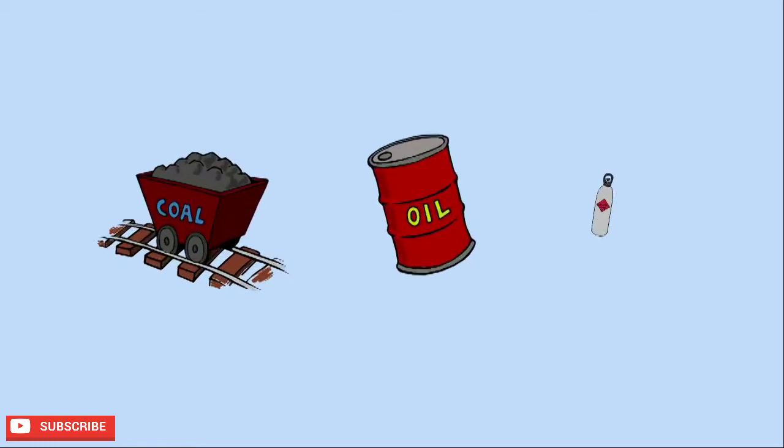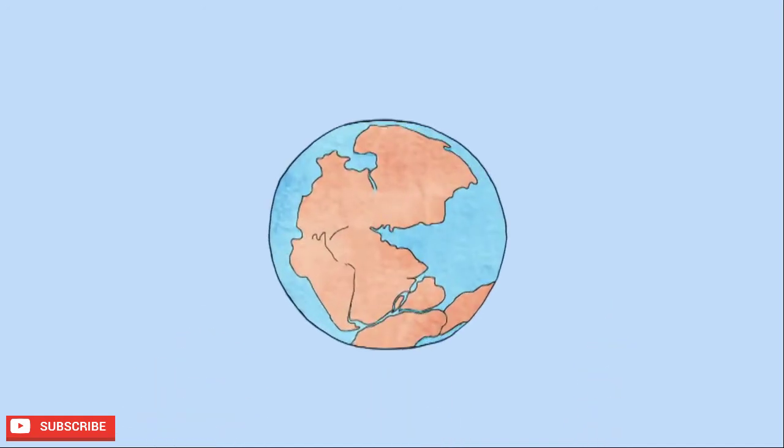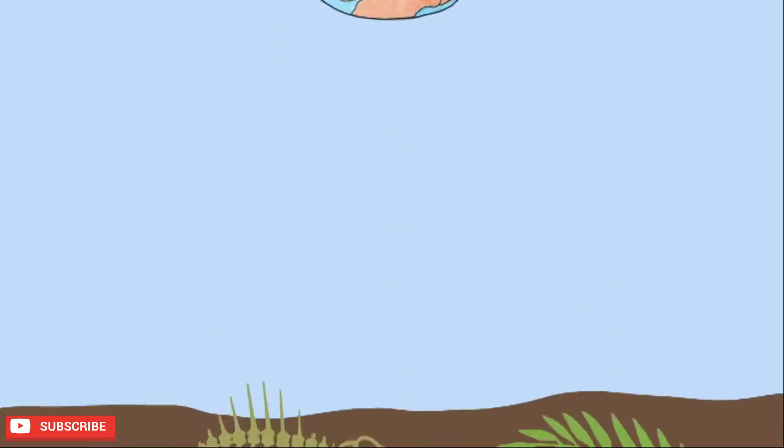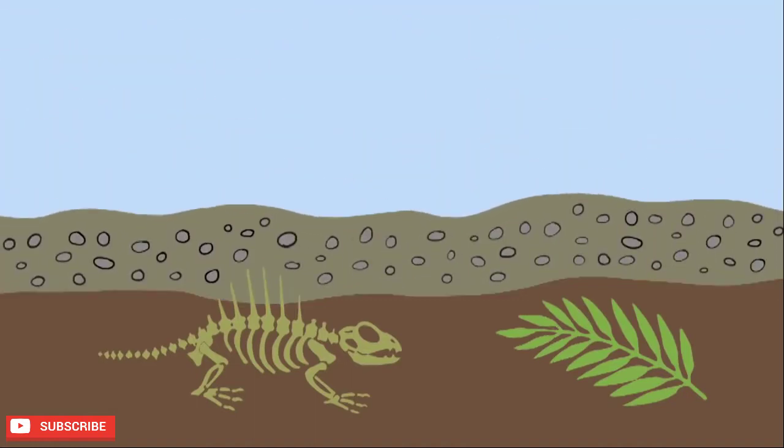Coal, oil and natural gas are fossil fuels. They were formed hundreds of millions of years ago when decaying plant and animal matter were buried under layers of mud, rock and sand which started to fossilise them.